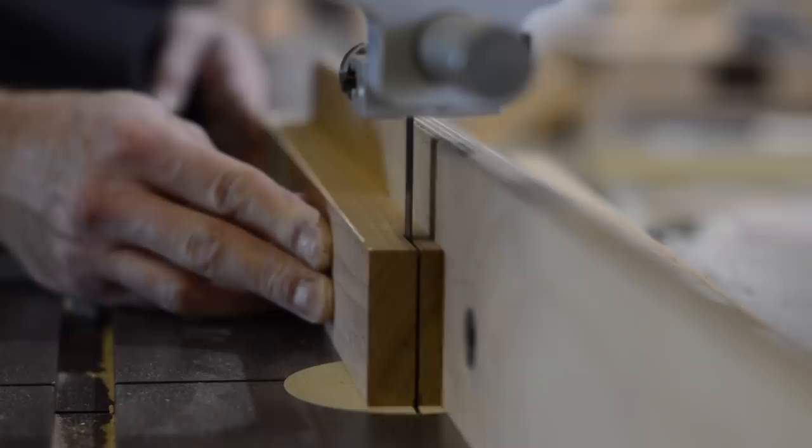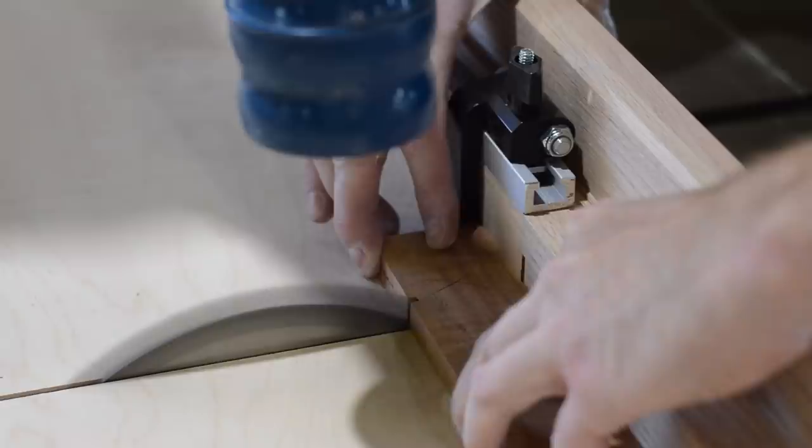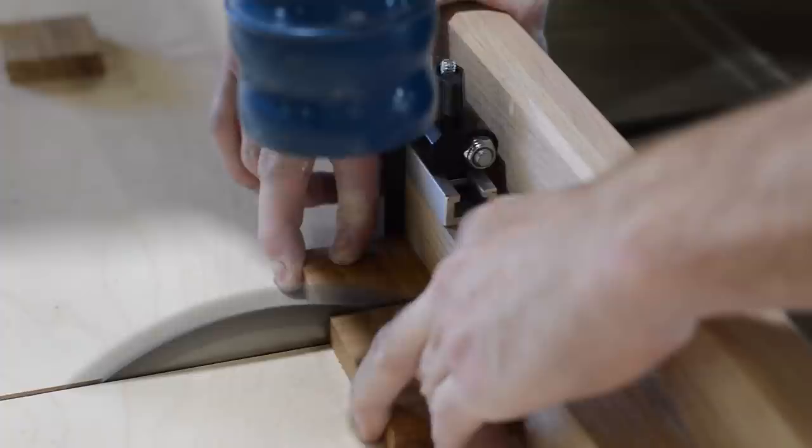The first item of note when making a mitered box is you need to keep track of the parts. So as these come off the saw, I like to mark each one and make sure that they all stay together. A table saw sled, in my opinion, is really the only way to accurately cut real small parts like this.